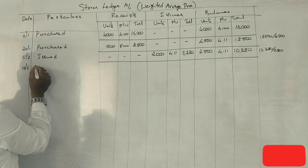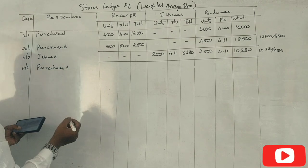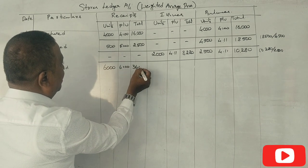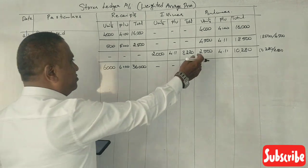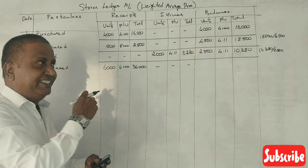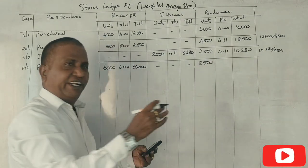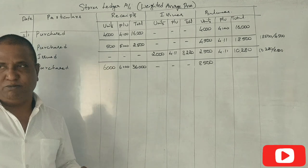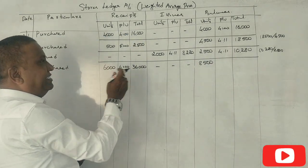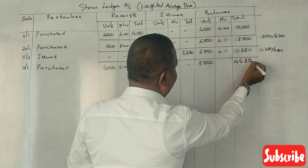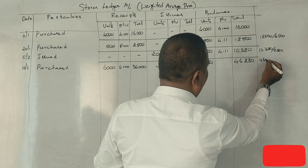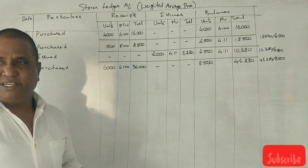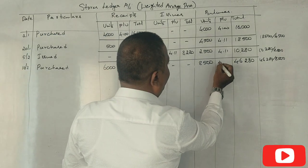On February 10th, again we have purchased 6,000 units at 6 rupees per unit, and this becomes 36,000. We already had 2,500 units in stores, freshly we purchased 6,000, so totally 8,500 units in stores. Now 10,280 plus 36,000 is 46,280. So 46,280 divided by 8,500 gives a per unit price of 5.44.